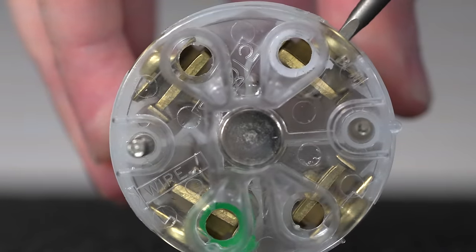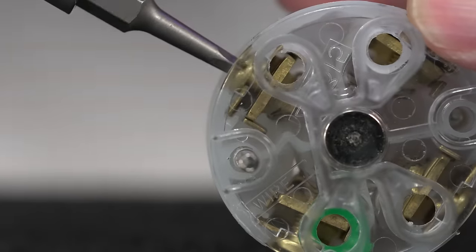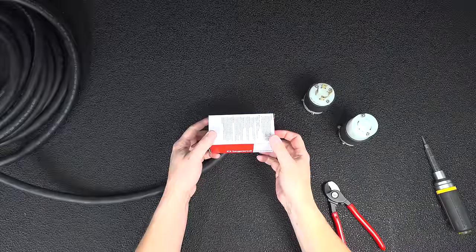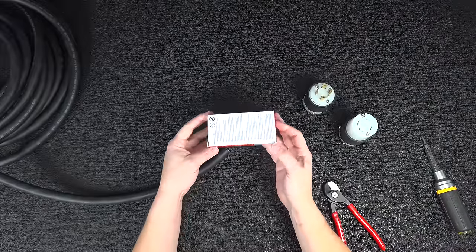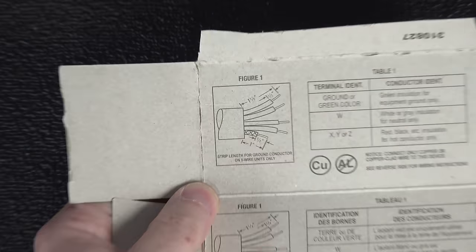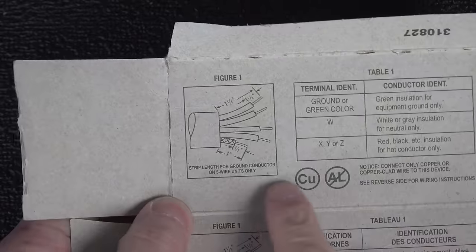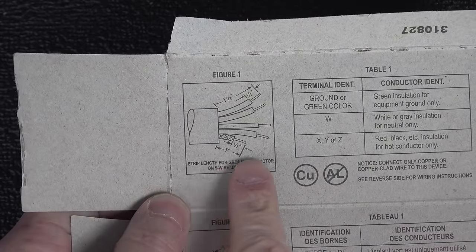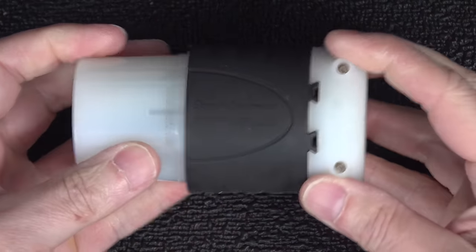It might seem easy but unfortunately most people mess this job up because they remove too much insulation from the cable itself. The only way to do this job correctly is to look at the instructions they include with the plug. Here you can see they clearly mark that you're only supposed to remove an inch and a half of the insulation.